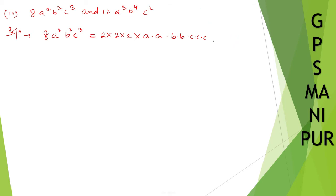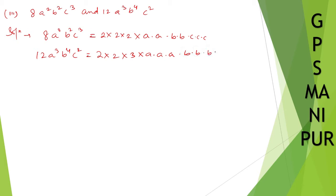Next one, 12a³b⁴c². I can write 12 as 2 into 2 into 3. Then a³ is a into a into a, b⁴ is b into b into b into b, and c² is c into c.